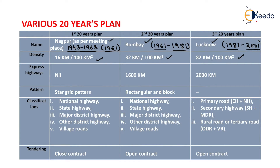So the density values are 16 km, 32 km, and 82 km per 100 km² for the Nagpur, Bombay, and Lucknow road plans respectively. In the first 20-year road plan there was no concept of express highway, so it is nil. In the Bombay road plan the proposed length of express highway is 1600 km, and in the Lucknow road plan the proposed length of express highway is 2000 km.